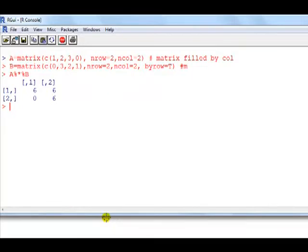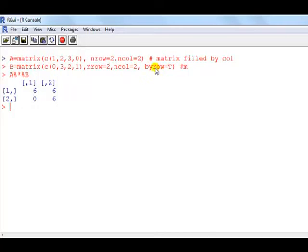Now in R we can do it as follows. We define a matrix A, which is filled by column. I define a matrix B, and for revision I've shown you how I can fill it by row instead of by columns. And then I multiply them. Now the symbol to multiply these matrices is this percentage design times and percent again.